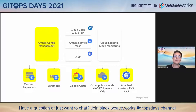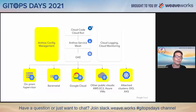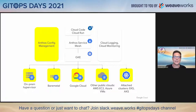All these environments can be managed with Anthos Config Management, including what we call attached clusters — clusters that are not GKE clusters, not provided by Google. Clusters like Amazon EKS, Azure Kubernetes Service, OpenShift — these can be onboarded with Anthos and managed with these tools, including Anthos Config Management.